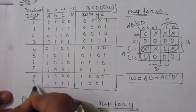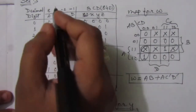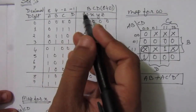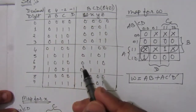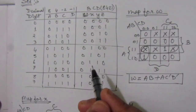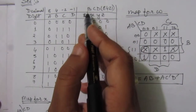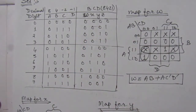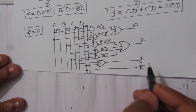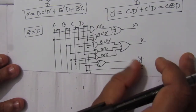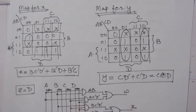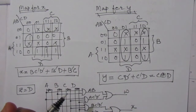This logic circuit converts decimal digits 0 to 9 from 8,4,-2,-1 code to BCD. The 8,4,-2,-1 codes come from table 1.5 in chapter 1, and for each BCD output W, X, Y, Z we made the K-map and found the equations, then drew the logic circuit. Thank you for watching. If you have any questions, please put them in the comment section below. Also like, share, and subscribe to my channel.